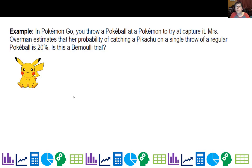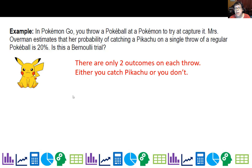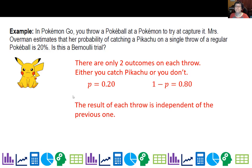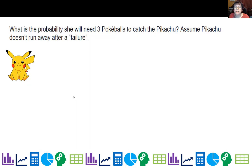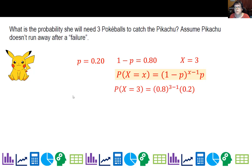In Pokemon Go, Mrs. Overman estimates her probability of catching a Pikachu on a single throw is 20%. Is this a Bernoulli trial? There are only two outcomes, we know our p, it doesn't change, and results are independent. The probability I'll need three pokeballs is (1-p) to the power (x-1) times p, with p = 0.2 and x = 3.